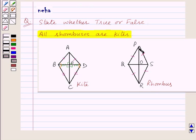Opposite angles are equal. That is angle P is equal to angle R and angle Q is equal to angle S.